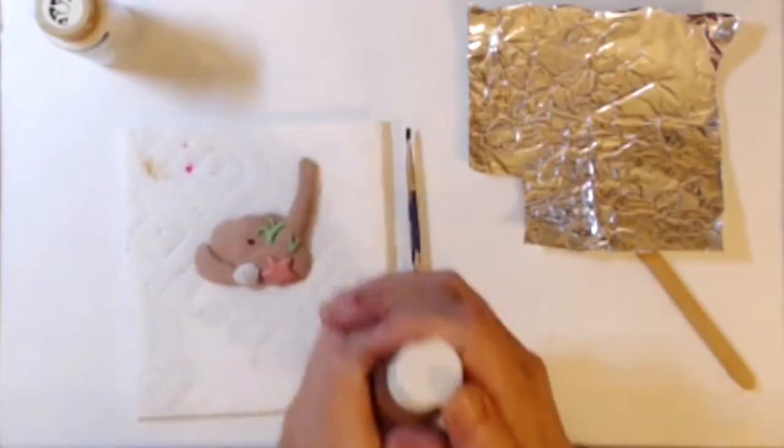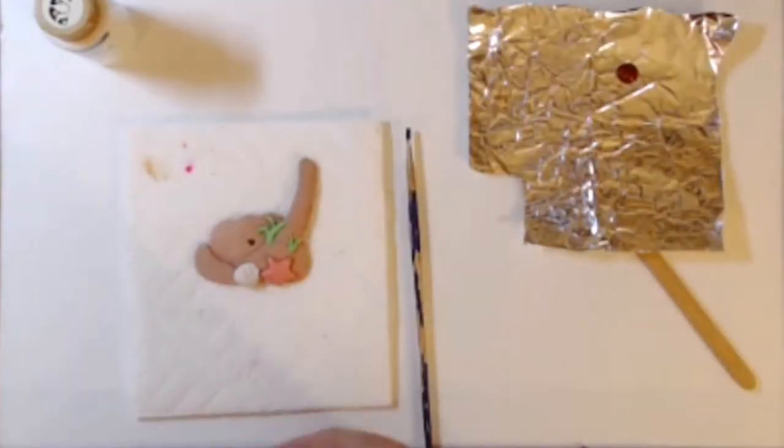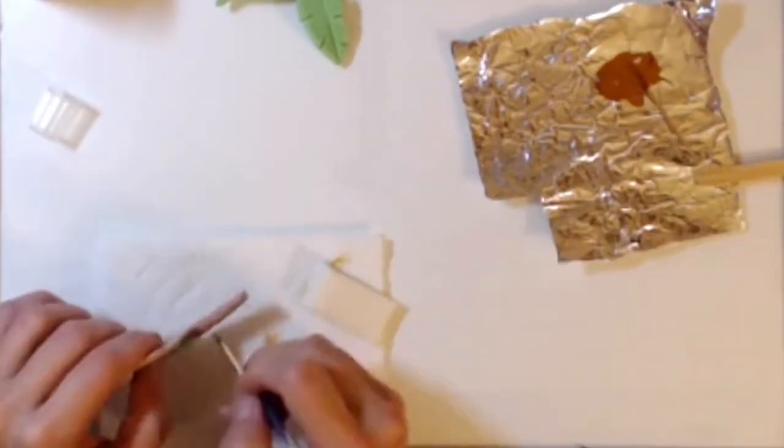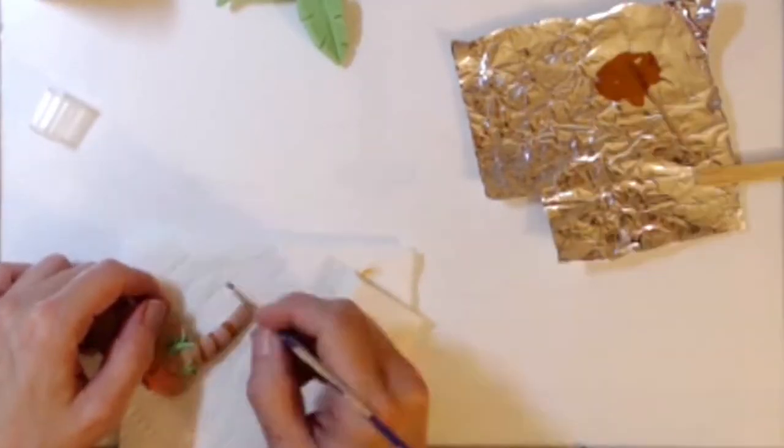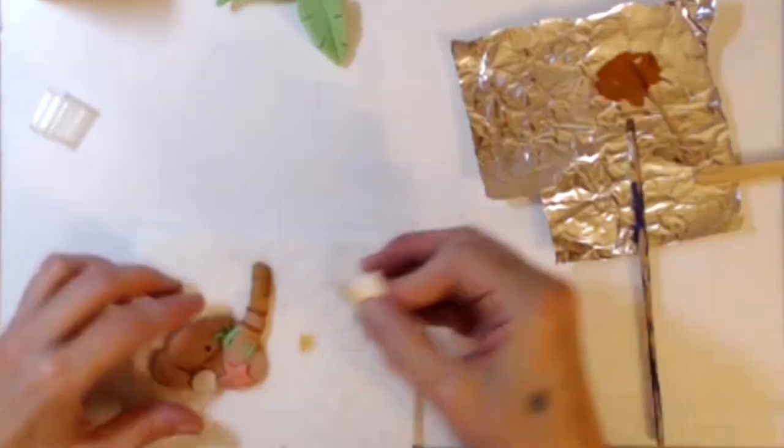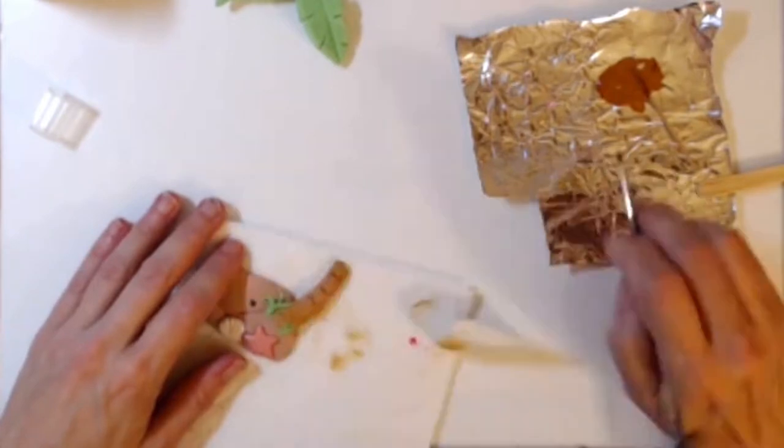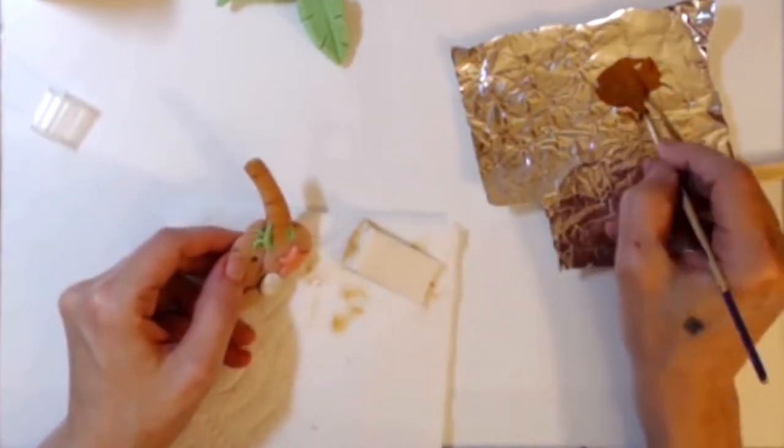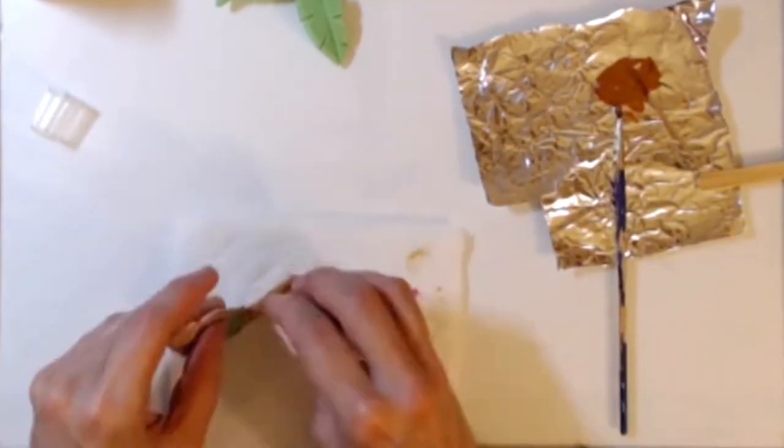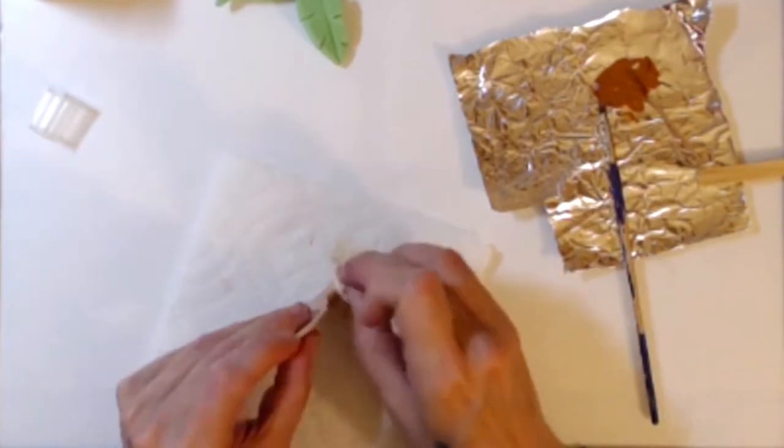I used burnt sienna acrylic paint watered down quite heavily to go in and highlight the texture on the palm tree trunk and along the beach. Just let it drip into the cracks. And then I used a clean makeup sponge to lift that color back off so that it just kind of sat in the grooves.